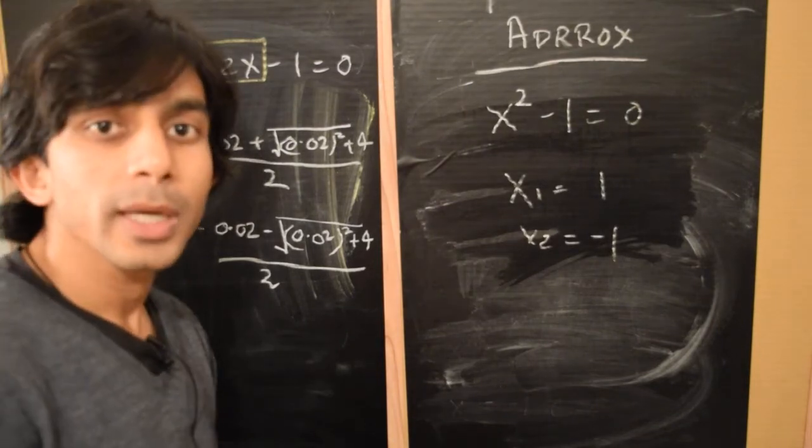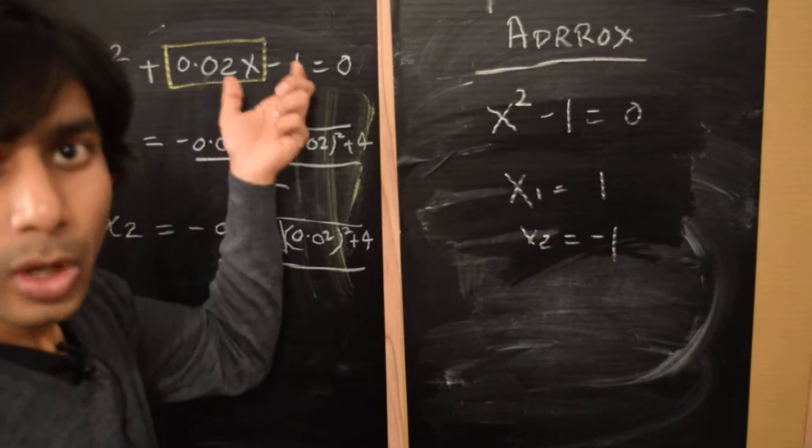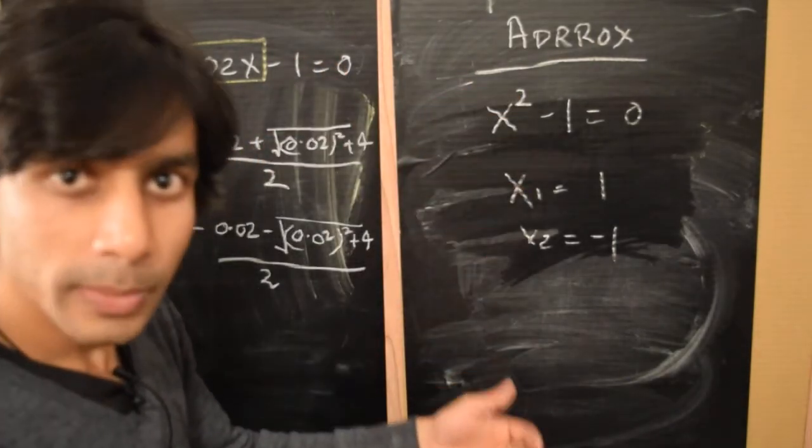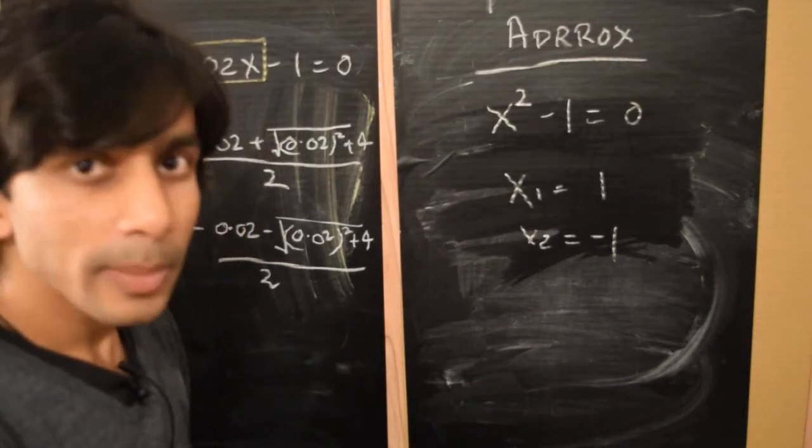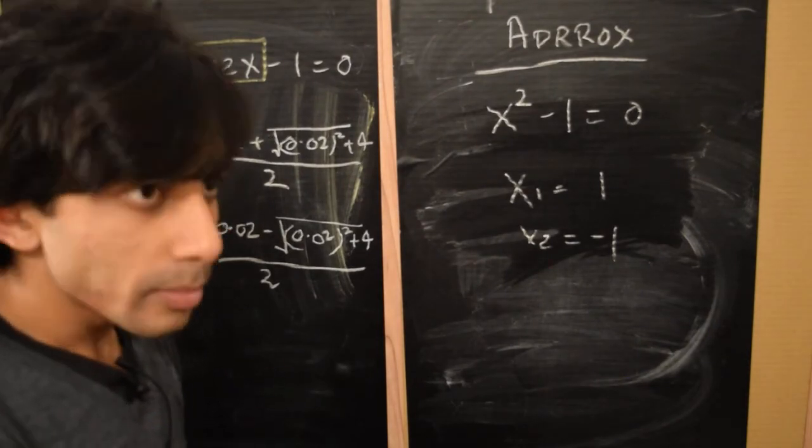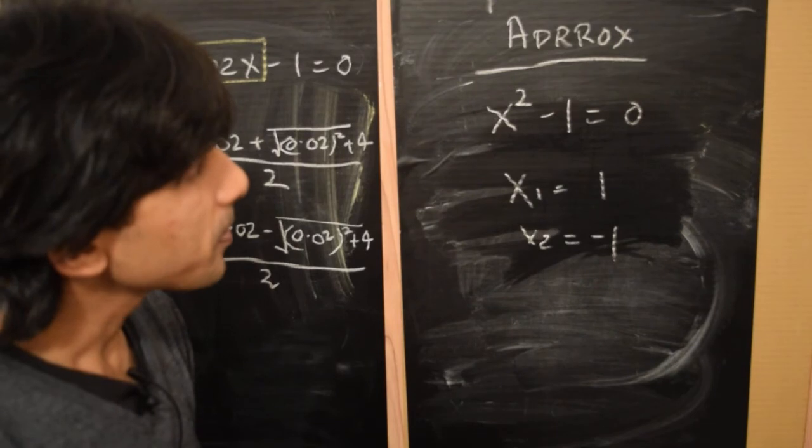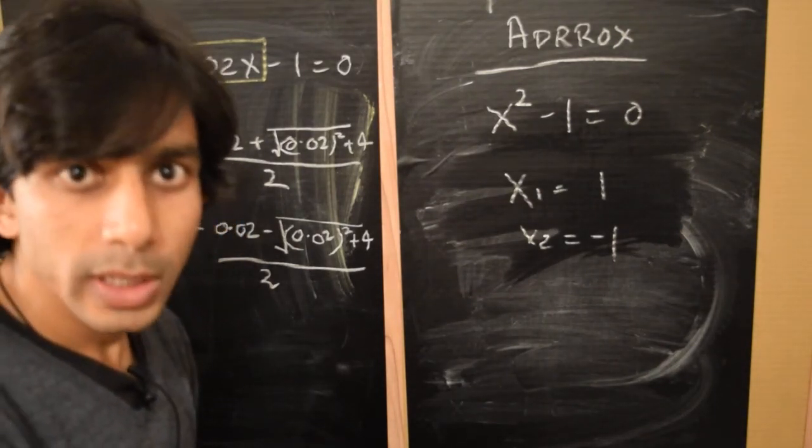And that's really the key idea behind perturbation theory: to take a more complicated equation and reduce it to a series of simpler equations that we can solve exactly, and then build up our solution systematically by systematically improving upon it through a process that we'll slowly uncover.